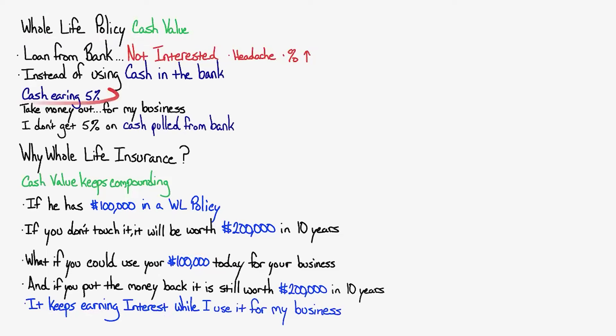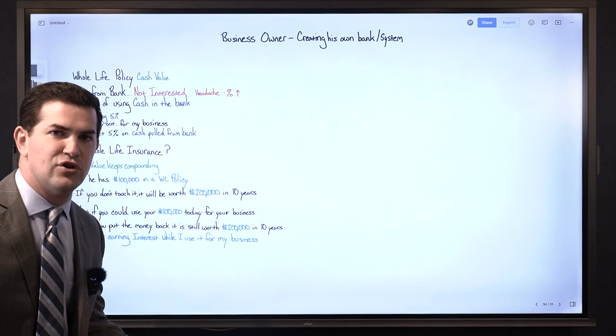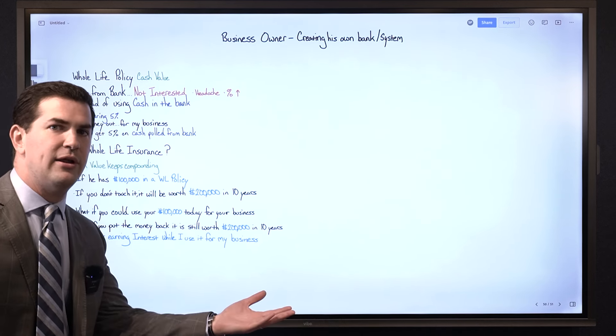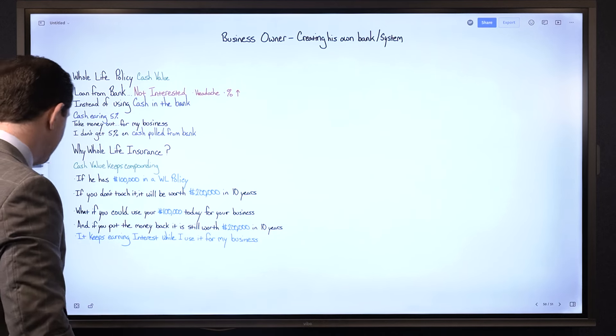It keeps earning interest in the policy while I can use it at the same time for my business. If I have money in cash earning 5% I'm going to take it out of that bank account, stop earning 5%, because I can probably or very likely will earn a higher return in my business. With the life insurance policy I get the compounding and I can use it for my business. That right there is what he is interested in.